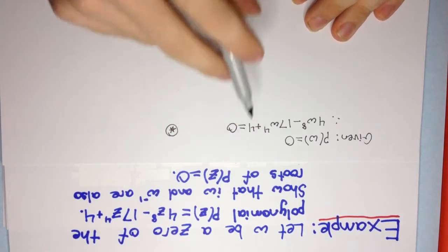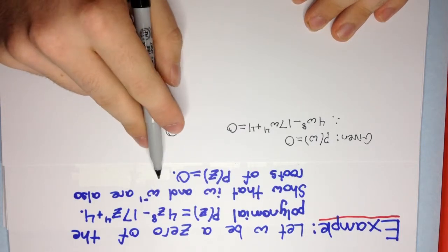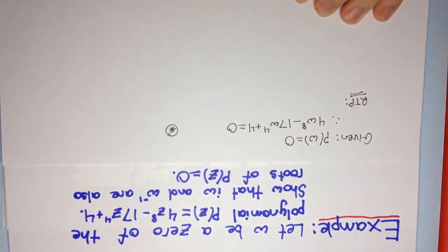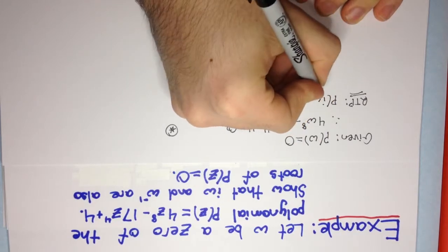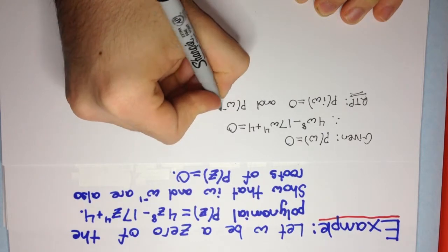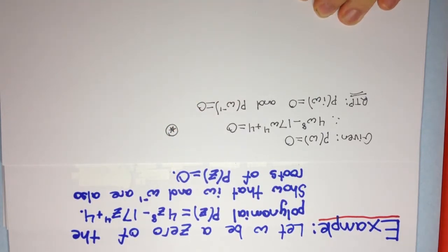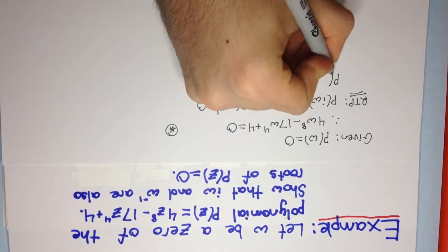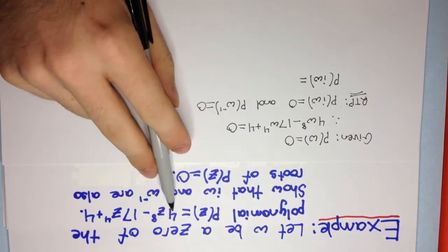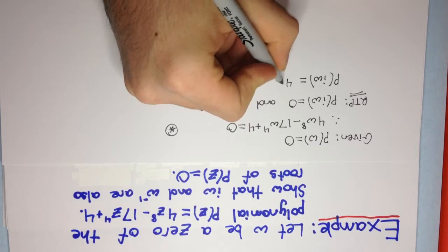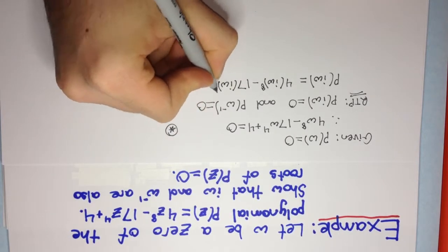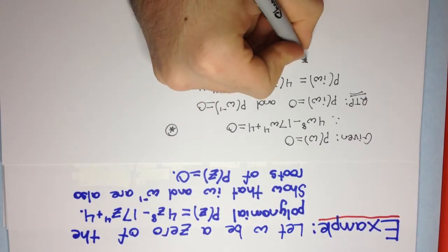We need to show that iω and ω⁻¹ are also roots of p(z). So we are required to prove that p(iω) = 0, and also that p(ω⁻¹) = 0. Let's start with p(iω). We just substitute iω into the polynomial, giving us 4(iω)⁸ - 17(iω)⁴ + 4.